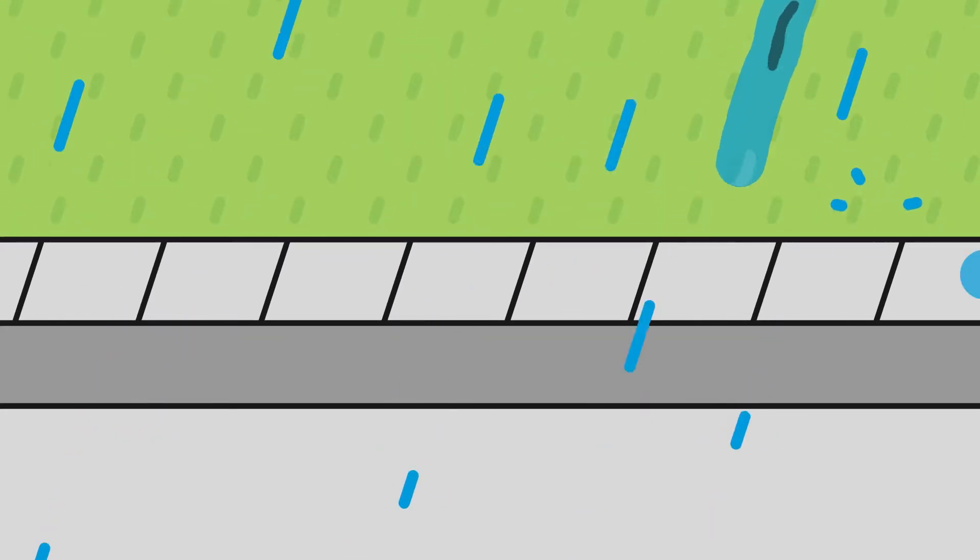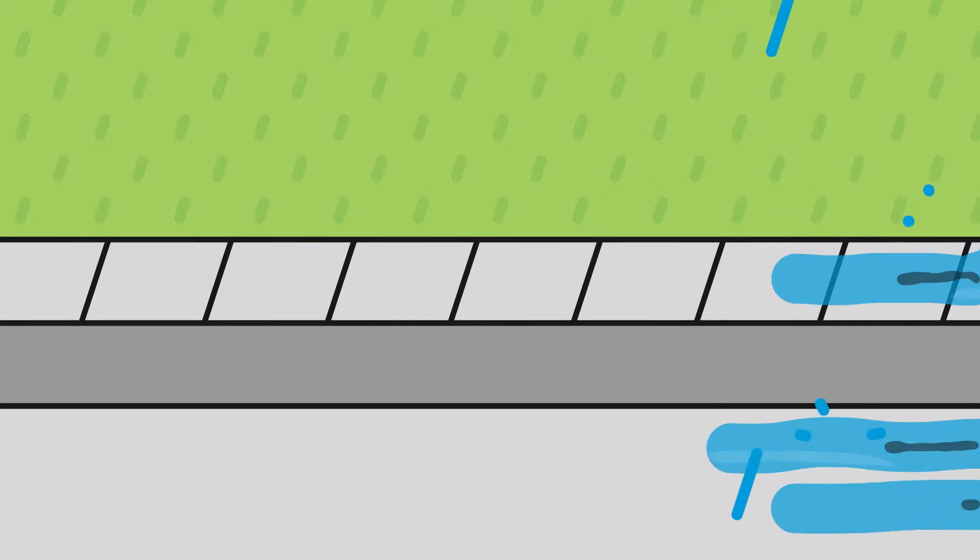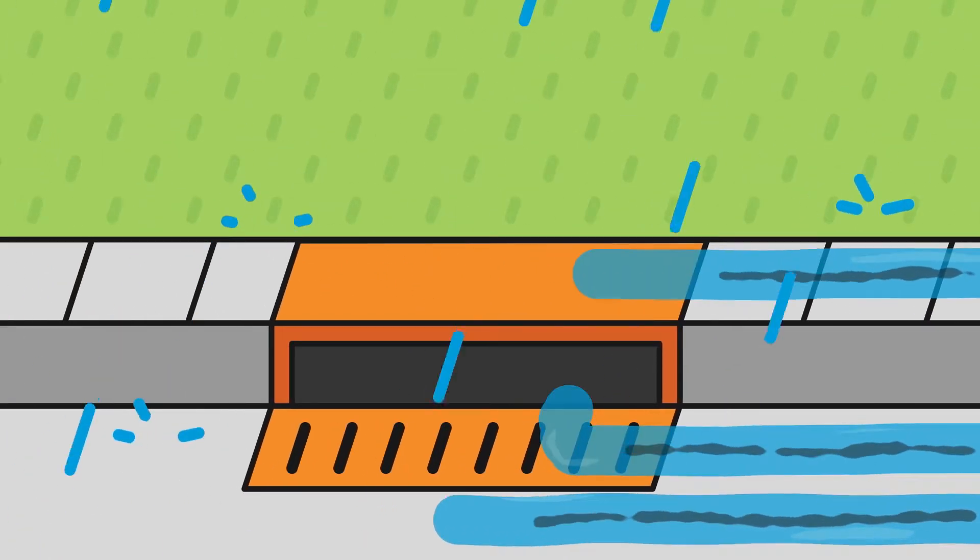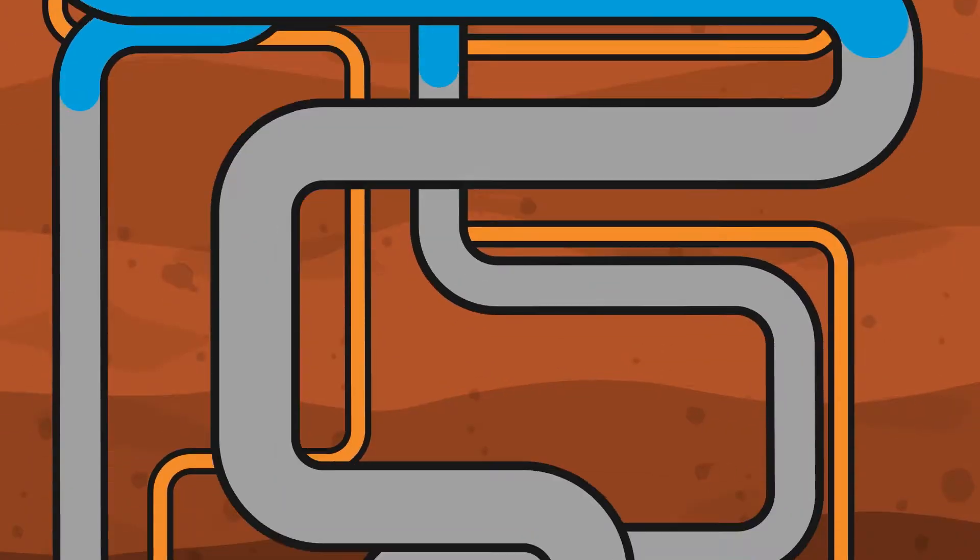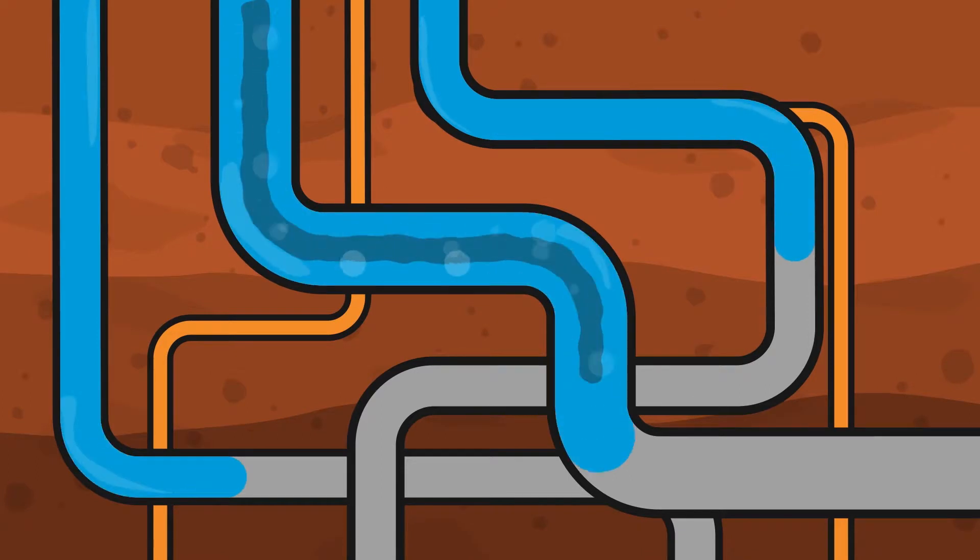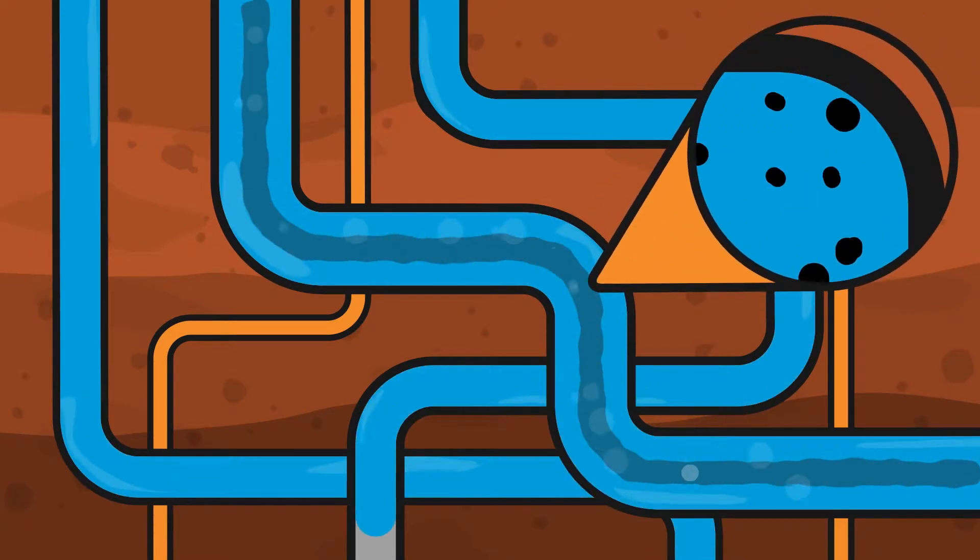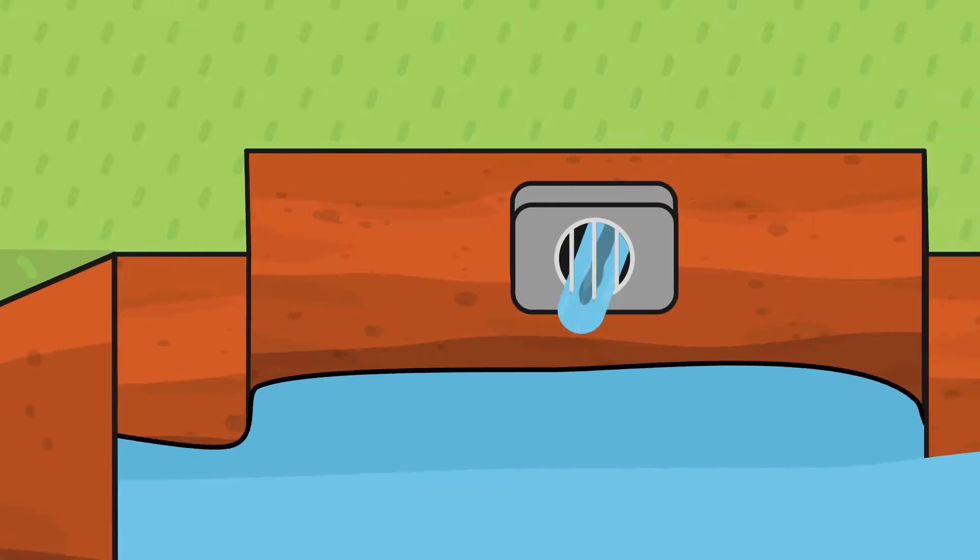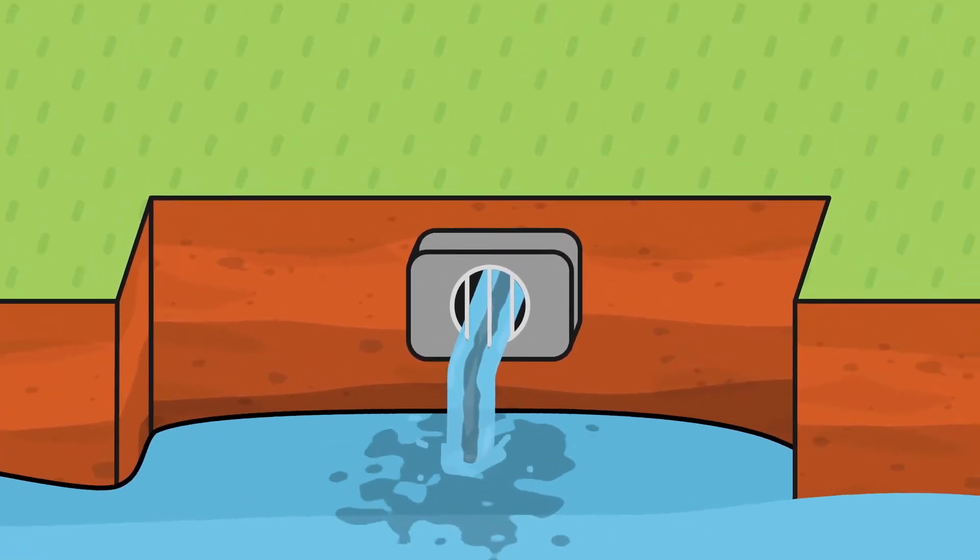When rain or water hits hard surfaces like pavement, it creates stormwater runoff. This picks up nasty pollution and drains out to the rivers, streams, and lakes that hold our drinking water. This pollution is not treated or removed, so it's up to each of us to keep it clean and fresh from the start.